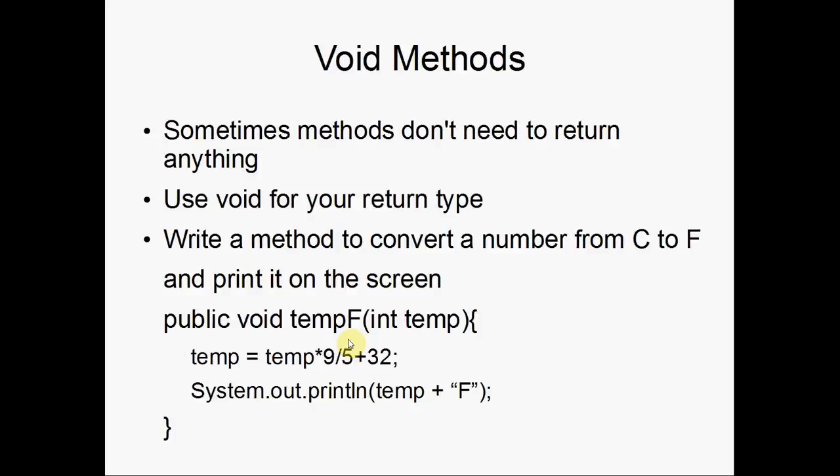So sometimes, methods don't need to return anything. We just need to call a set of instructions. So, you can use void for your return type in these scenarios. As you can see, we have our access modifier public. Don't worry about that too much just yet. We have void, which is that return type, signifying that we're not returning anything. Then we have the name tempf, and we're passing in an integer, and we're going to call that integer temp.